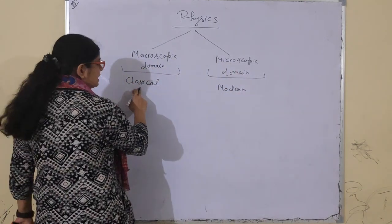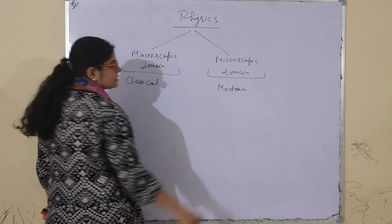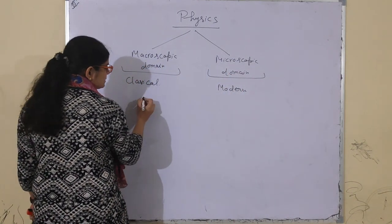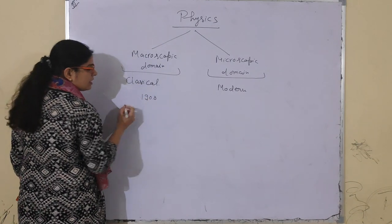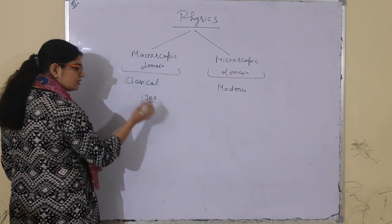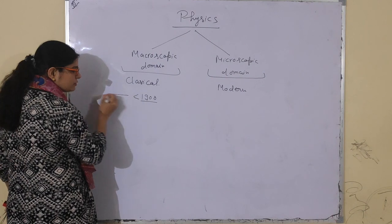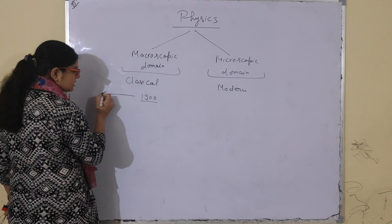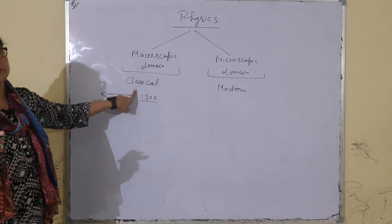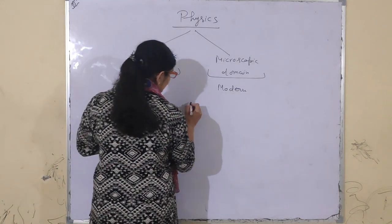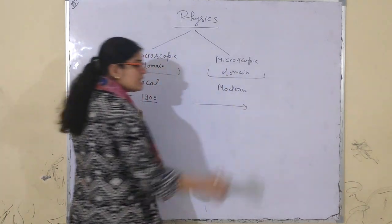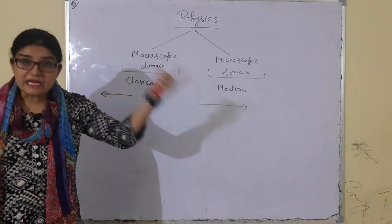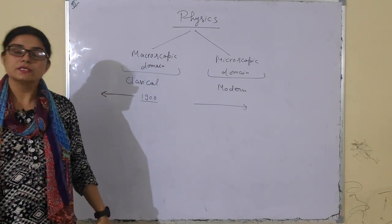Classical physics and modern physics — before 1900, the physics discoveries that happened, that was classical physics. Aur 1900 ke baad ki jo physics hai, that is based on atomic scale, that is modern physics.